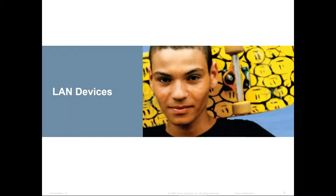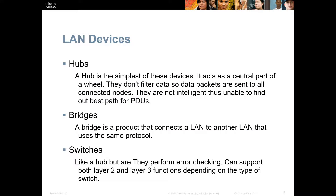Let's get into our LAN devices. Some of our common LAN devices are hubs, bridges, and switches. A hub is a dumb device. It will take an input signal, clone the signal, and pass it out all ports. They do not filter data, so all frames are sent on all ports.